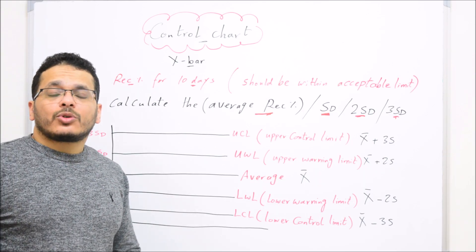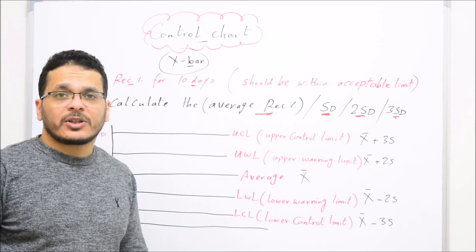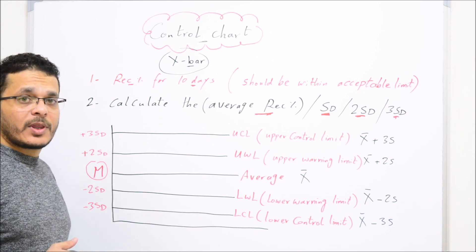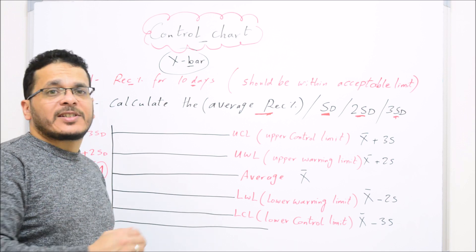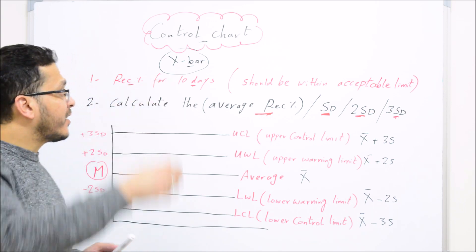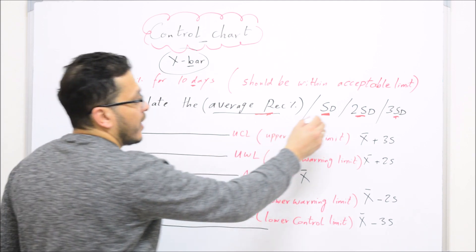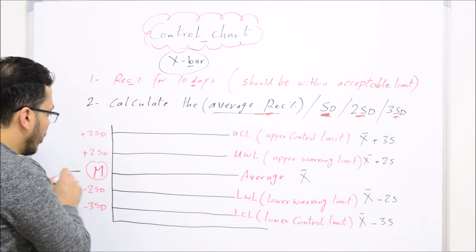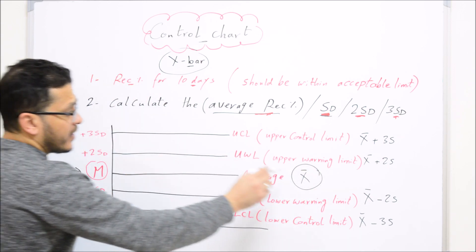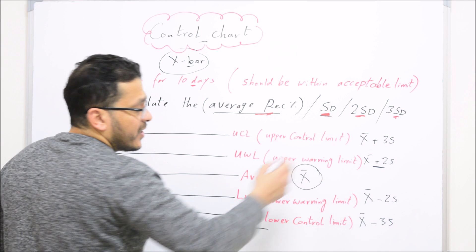There are many types of control charts, but the X-bar control chart is the most common type used in accredited laboratories, and that is what I will explain in this lecture. You run a spike sample every sequence and calculate the recovery for 10 days. After 10 days, you calculate the average of all these recoveries and the standard deviation. The average will be the central line, which is X-bar. X-bar plus 2 standard deviations gives the upper warning limit, and X-bar plus 3 standard deviations gives the upper control limit (or upper action limit).